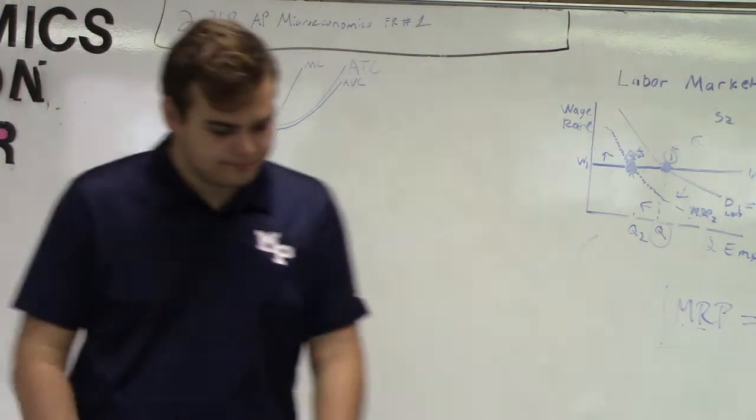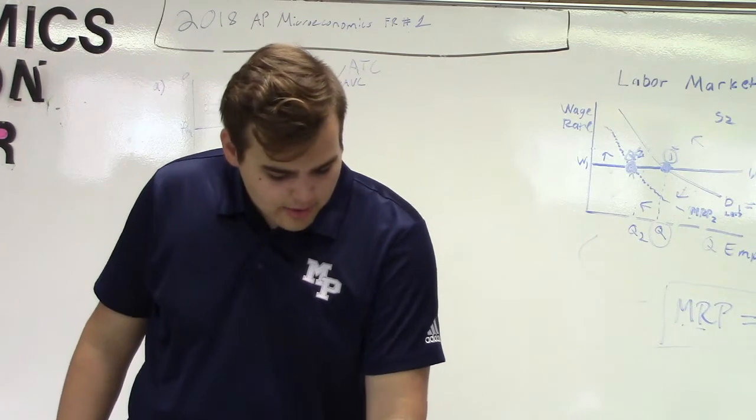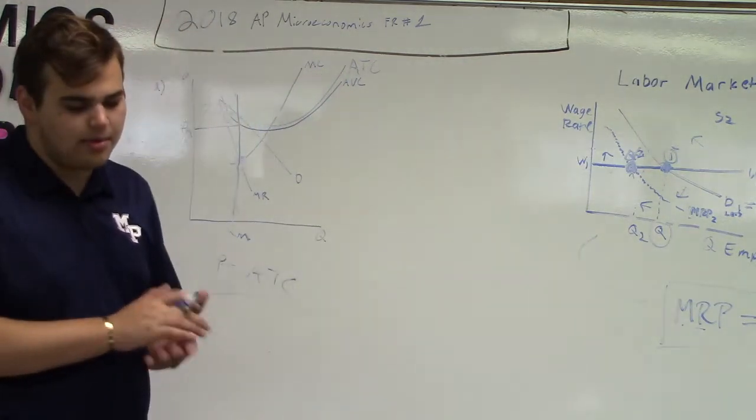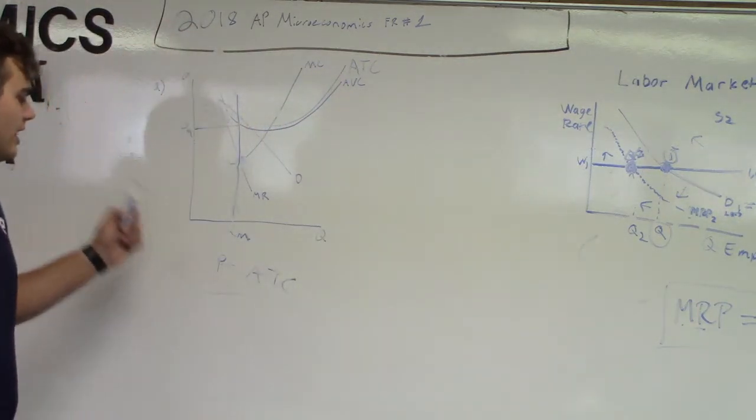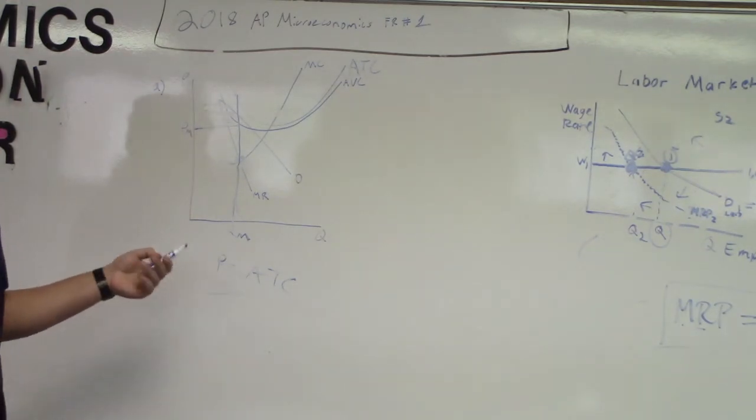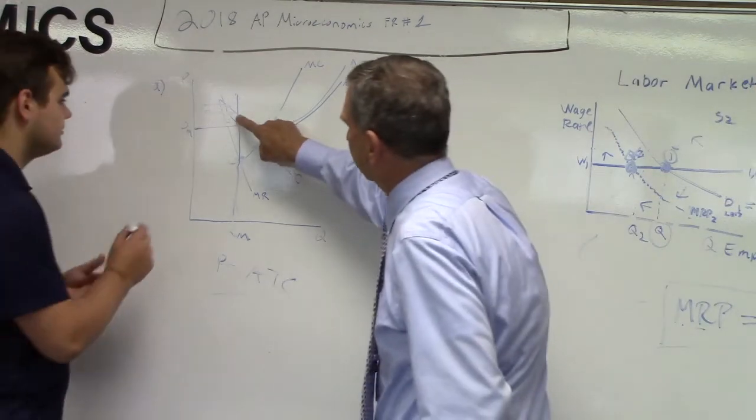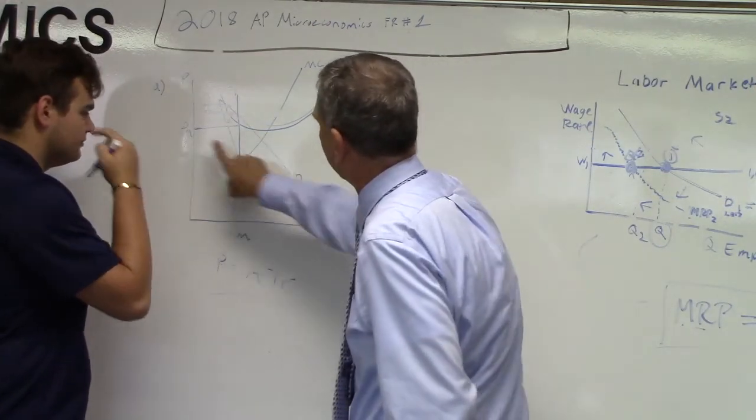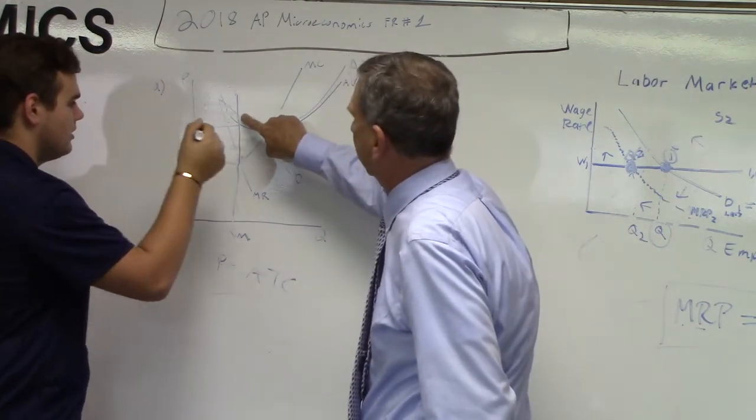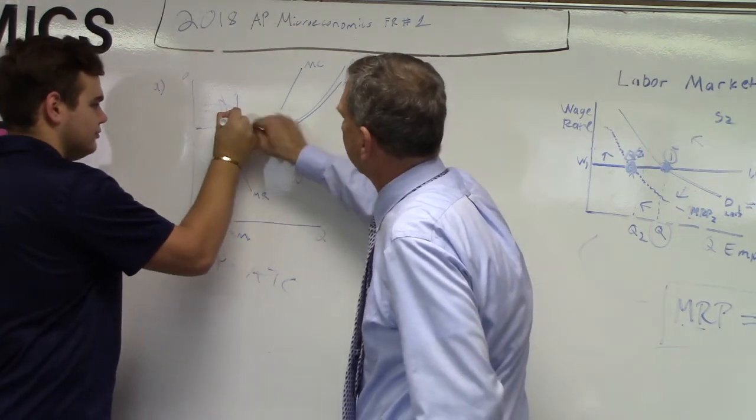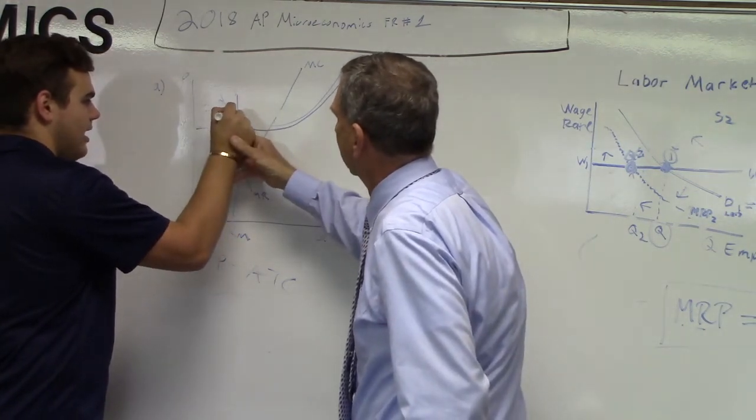So part B. So the last part of this is shading the area of the negative economic profit. See, the price is where it hits the demand curve. So put a big dot right here.